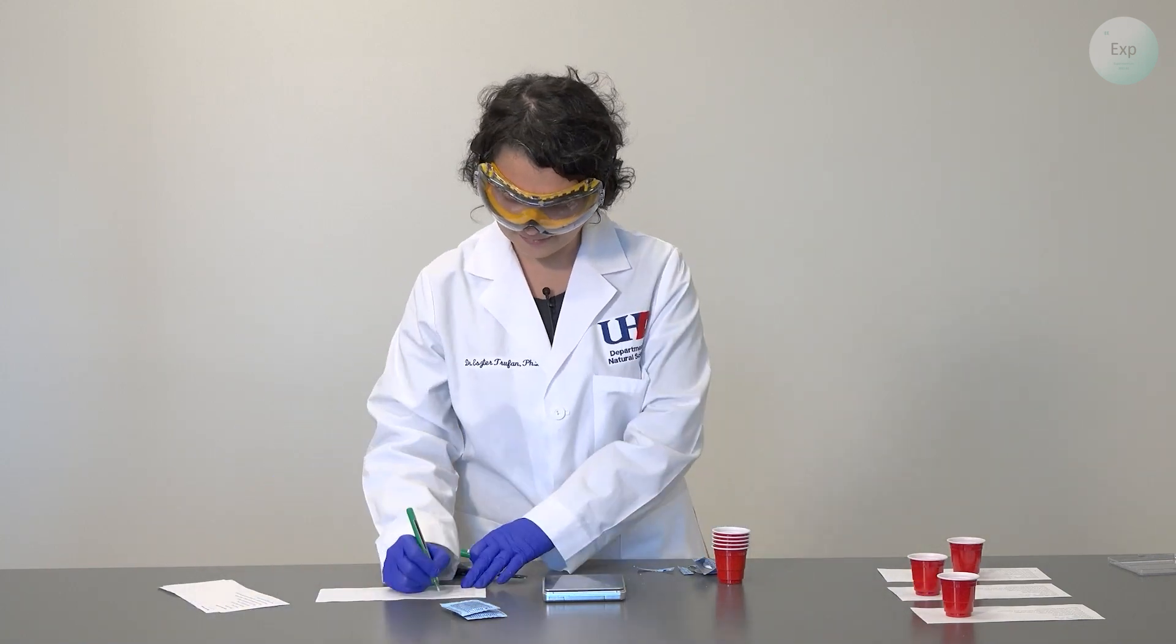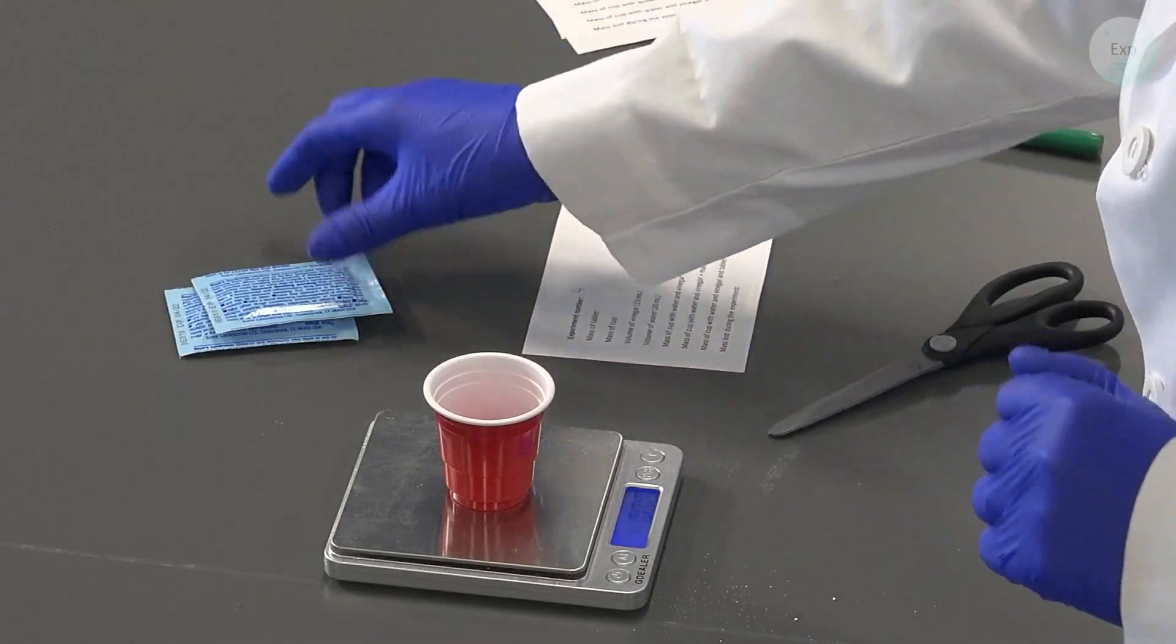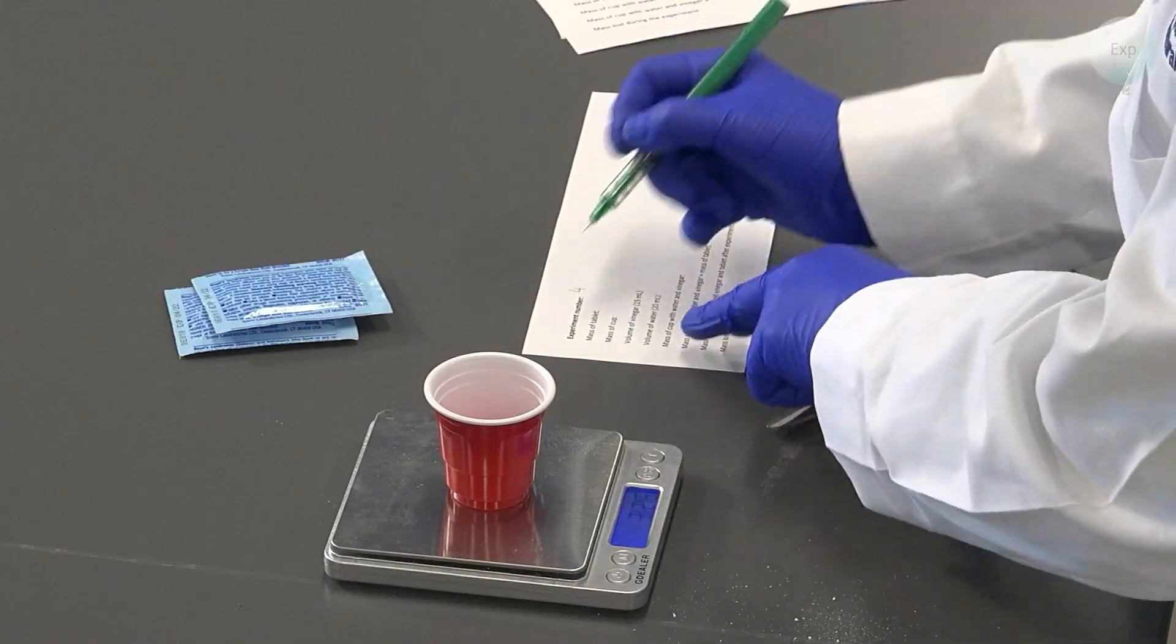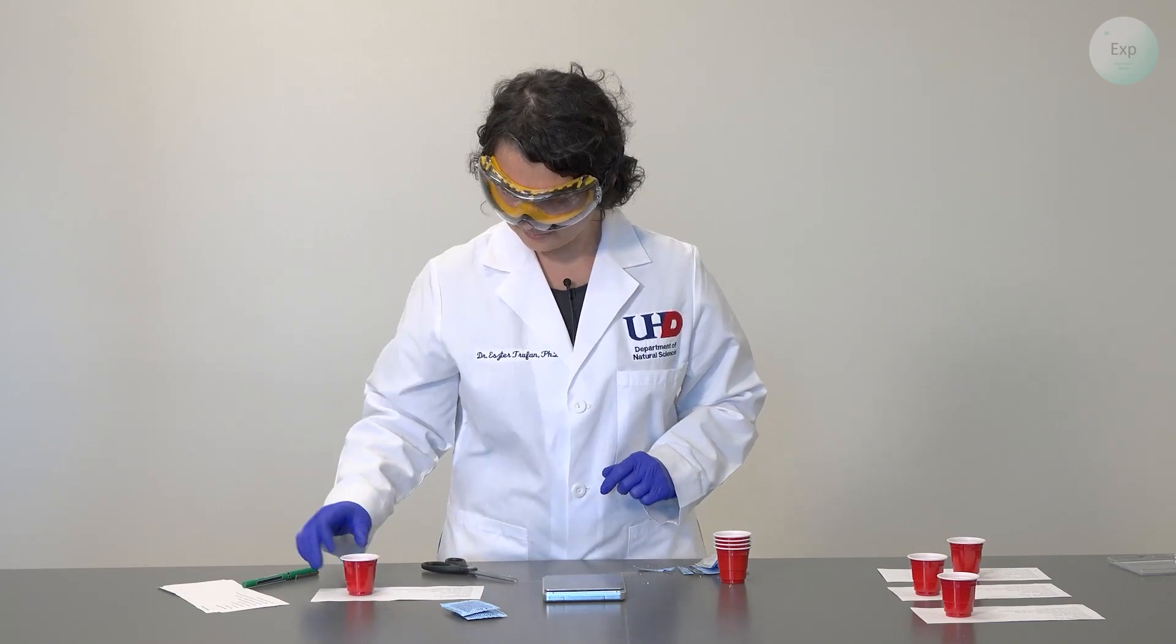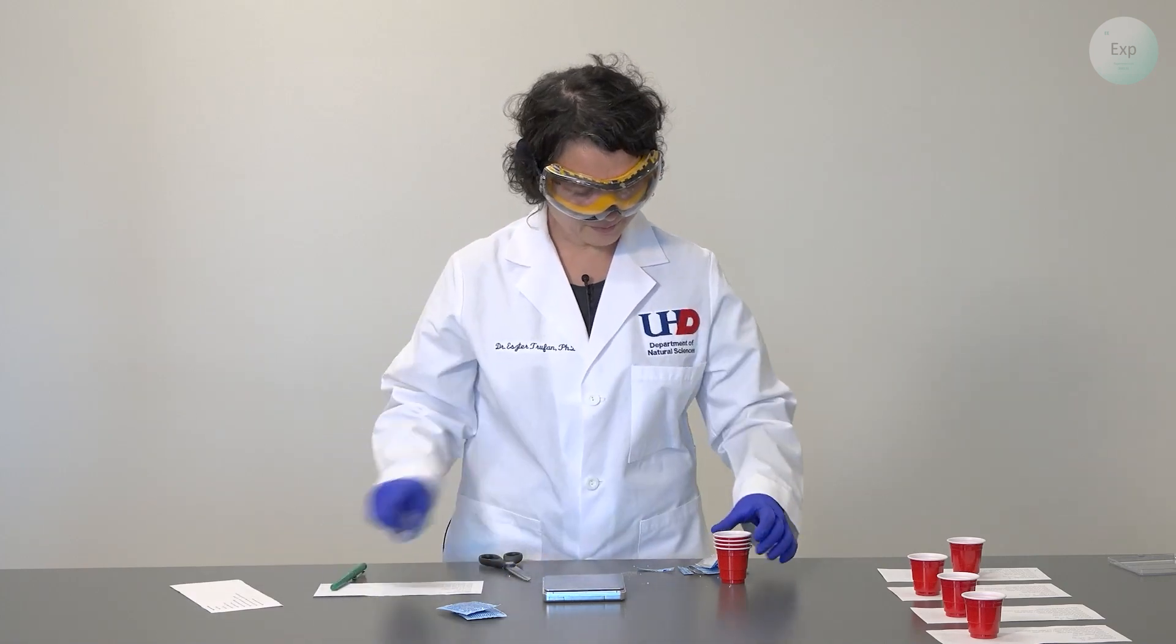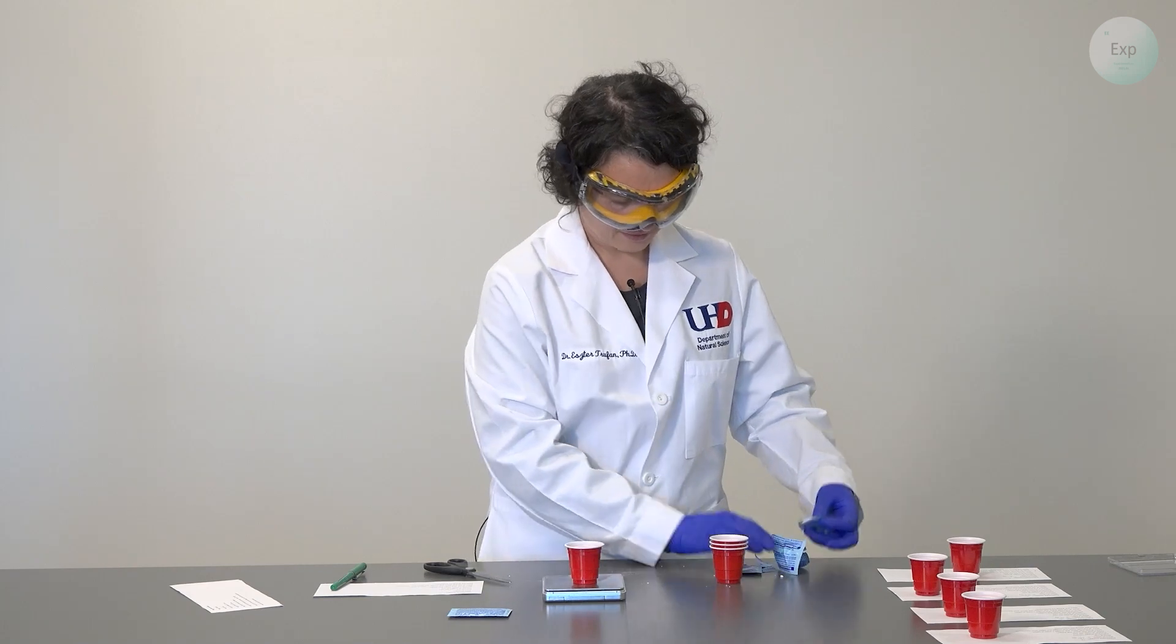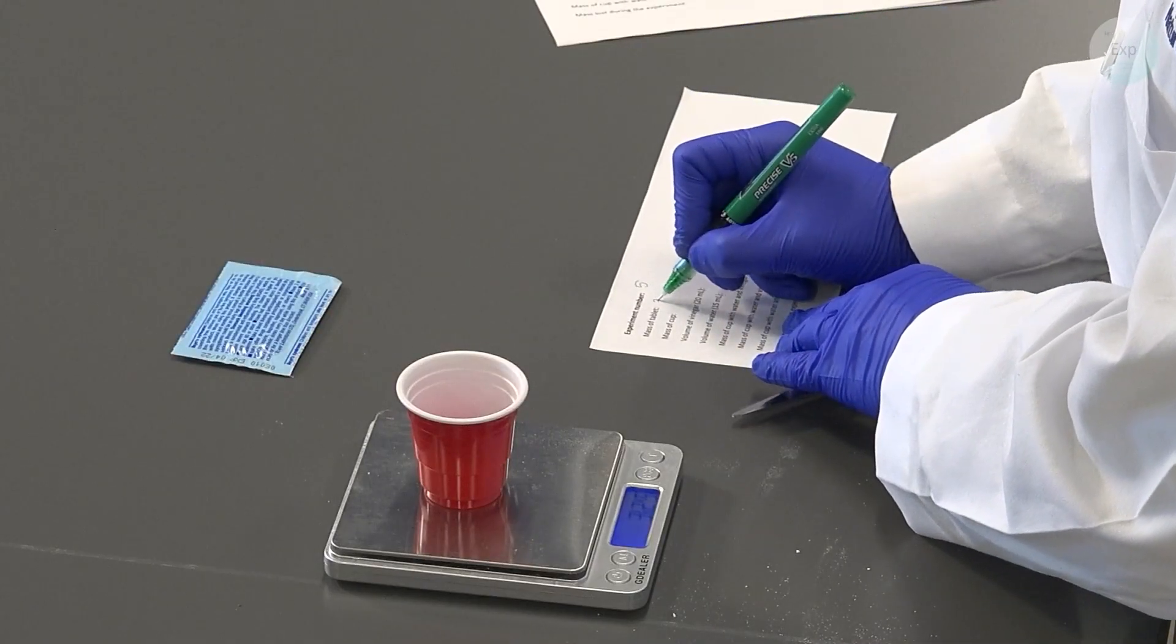For our fourth experiment we're going to do the same exact thing. Let's not forget to tare every time we place a cup on the scale. Our fourth tablet weighs 3.26 grams. For experiment five we bring up our cup, place it on the scale, make sure that it's tared, extract our next tablet and place it inside the cup. The mass of our tablet is 3.25 grams.